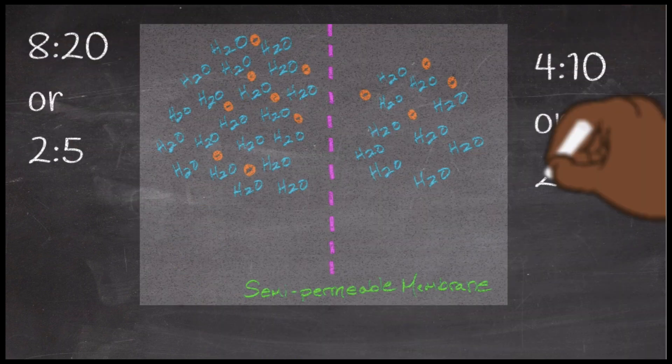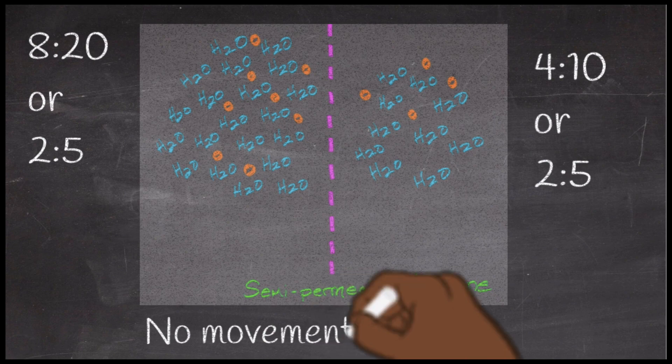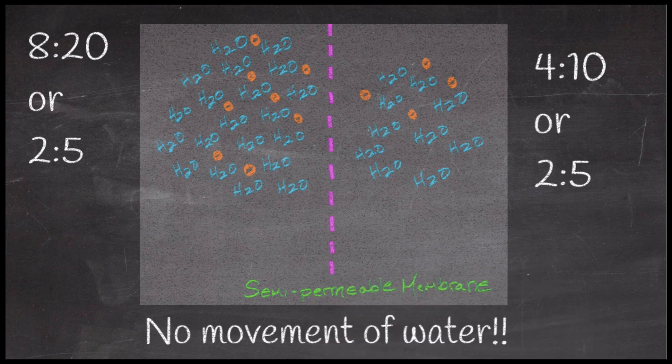In all of these slides, we're going to have 20 water molecules on the left side of the membrane — the membrane is a pink dotted line down the middle. There are 20 water molecules on the left and 10 water molecules on the right. In orange, in all of these subsequent slides, will be the solute. It doesn't matter what the solute is — they could be sodium ions, potassium ions, glucose, or a mix of all of them. It doesn't matter what the solutes are.